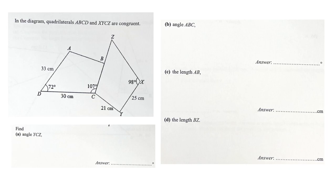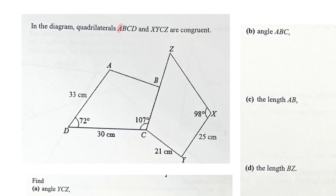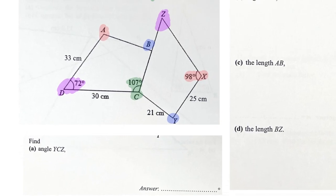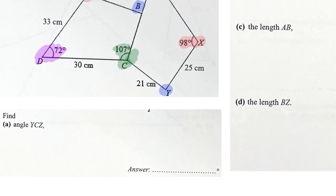Hello everyone, welcome to this video where we are given congruent figures. From here the question tells us the corresponding things. Angle A corresponds to angle X, B corresponds to Y, C corresponds to C, and D corresponds to Z. So angle YCZ — which is this angle — is simply 107 degrees.